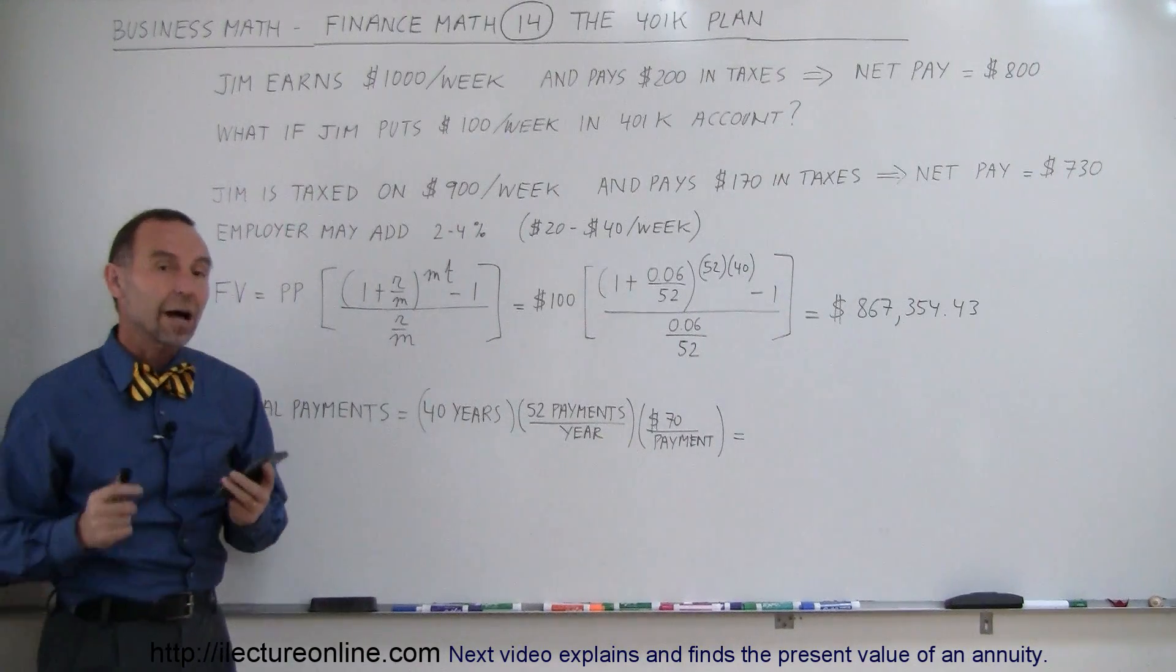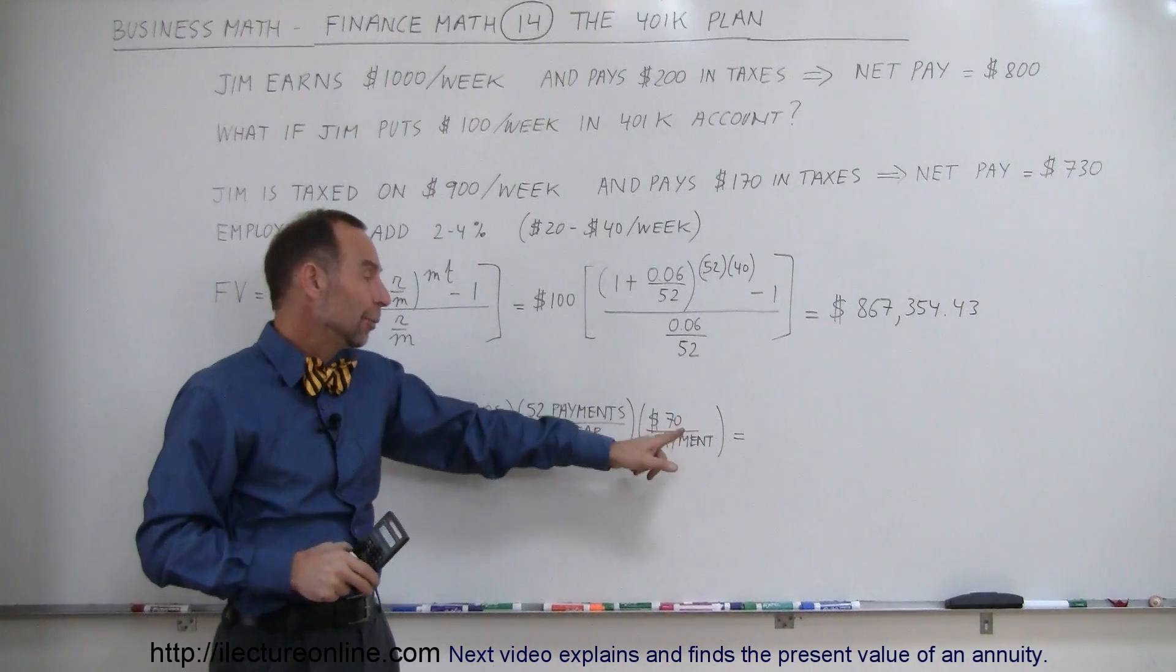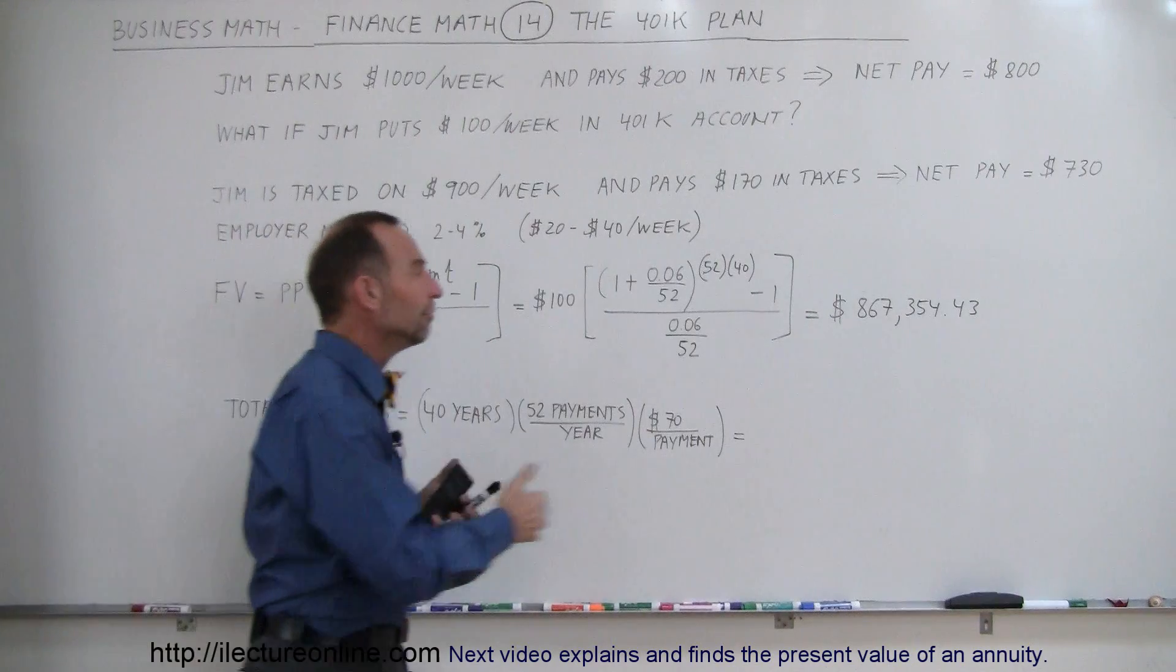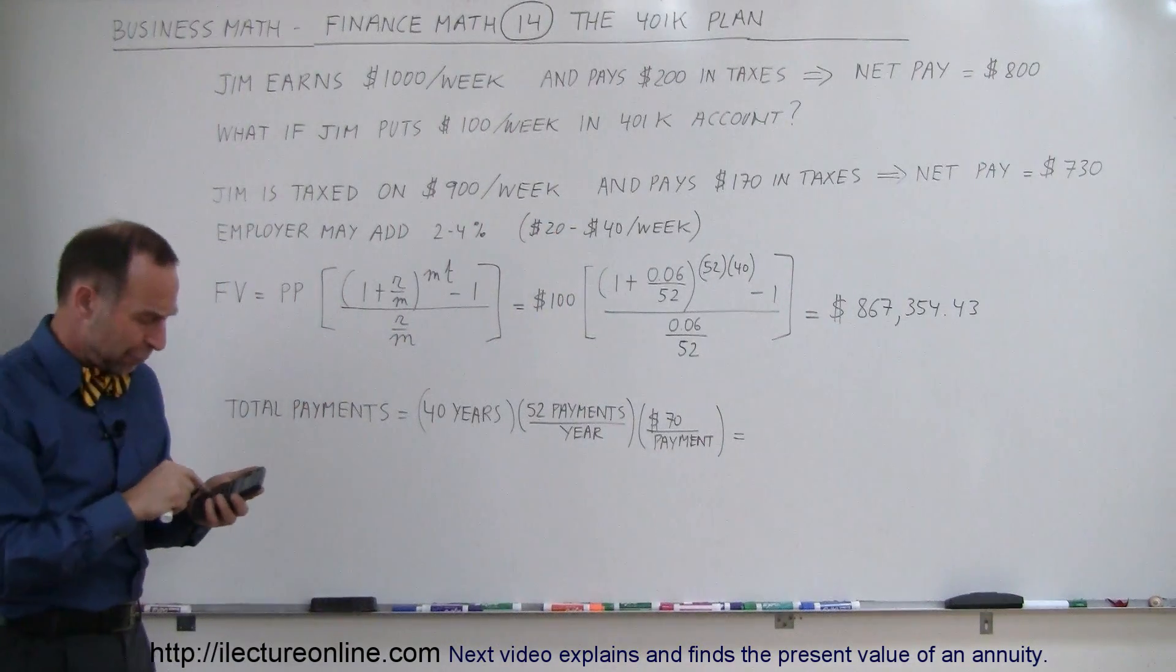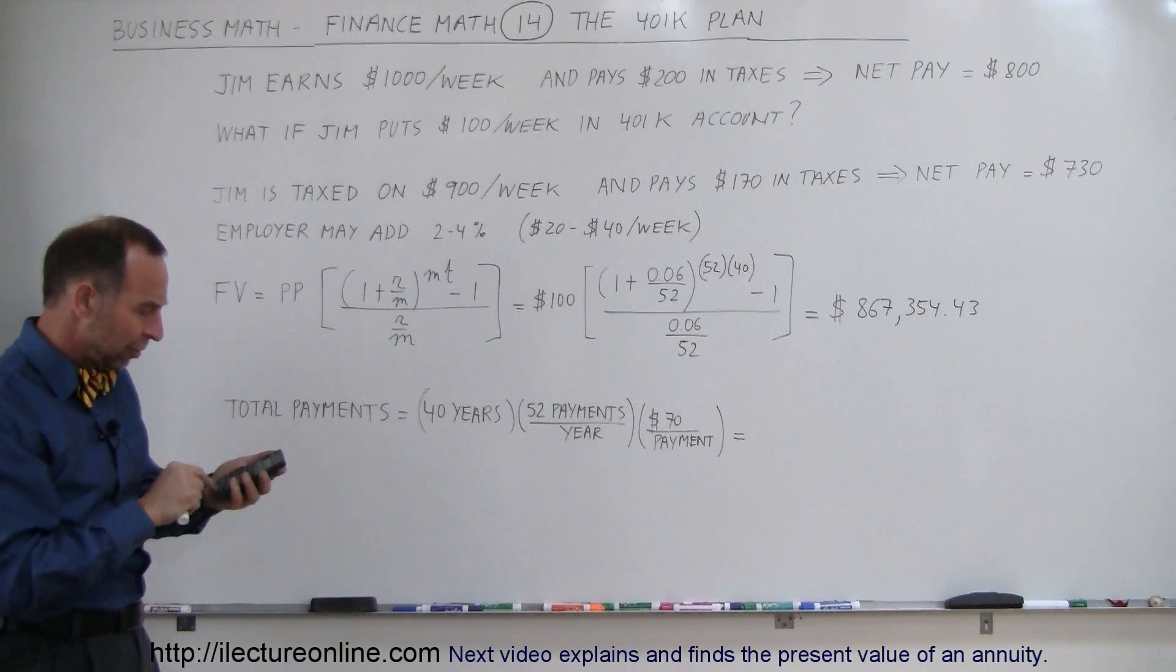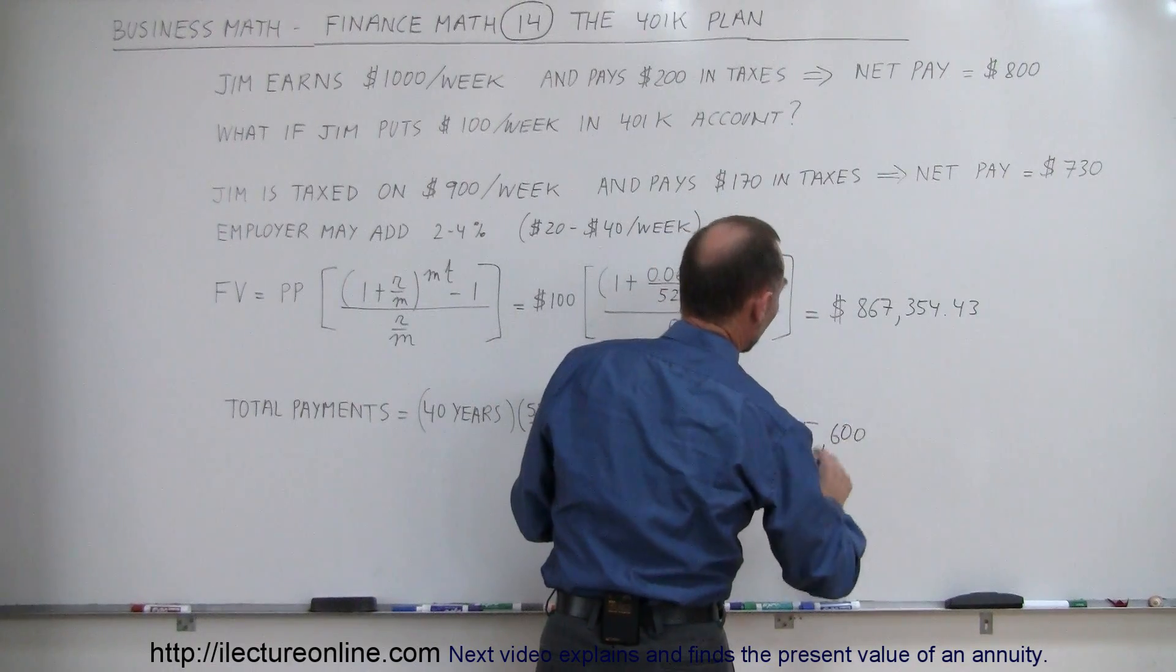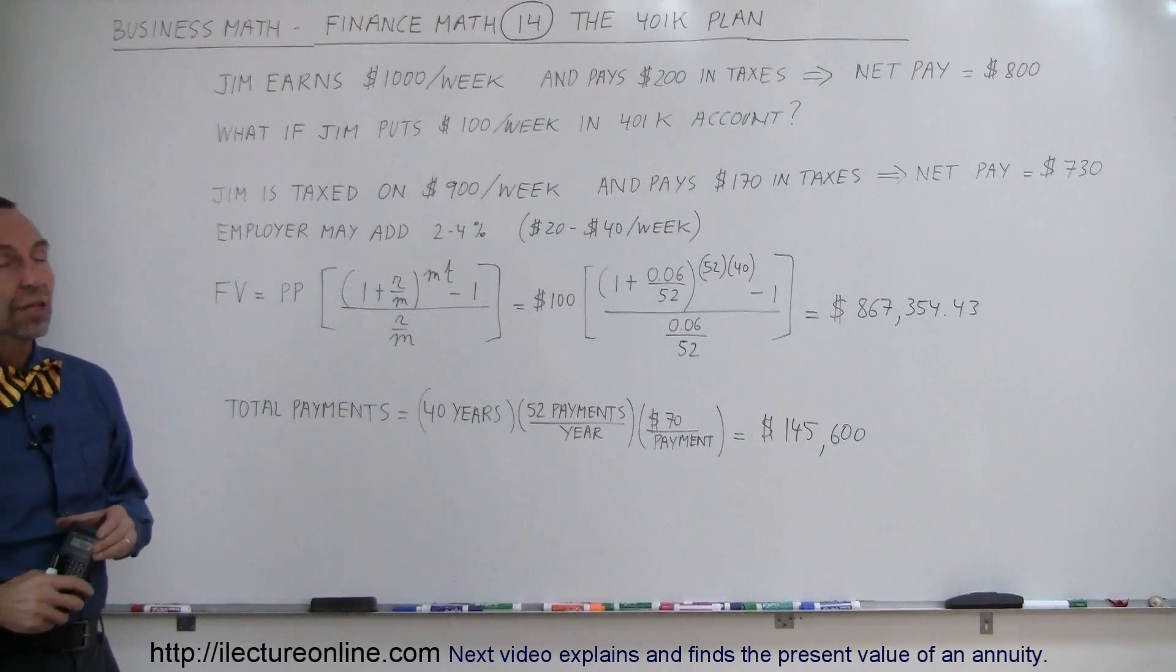Well, how much did that cost him? How much did they have to come out of his paycheck? And so, even though he took $100 out of his paycheck, it really only cost him $70 per week. So, he took home how much money less than what he could have and how much did they end up with. All right. So, we take 40 years, 52 payments per year, and $70 of lost money. And so, it only cost him $145,600 to have $867,000 in the bank when he retired. A really good deal.